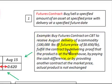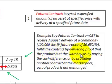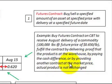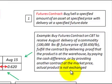To fulfill this contract, we either do it through delivering proof that the product is at the warehouse, by paying a cash difference, or by providing another contract at the market price. The actual product is not exchanged.